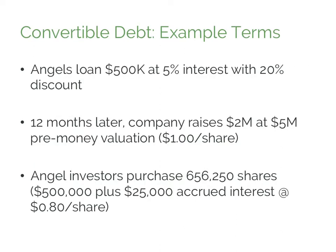Let's talk through a specific example to see how these terms work. In our example, angels are loaning $500,000 to the company in a convertible note with 5% interest at a 20% discount. To keep the math simple, we're going to assume the company currently has 5 million shares outstanding.